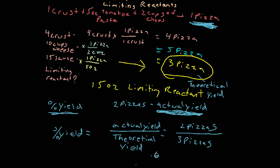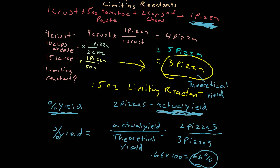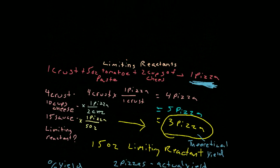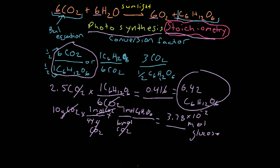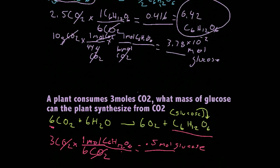It's really 0.66 times 100, which equals 66%. So my percent yield was 66% — I wasn't terribly close to perfection when I only made two pizzas. You can plug this same concept into the stoichiometry equations we worked with before, like the one with 6CO₂, 6H₂O, and glucose.